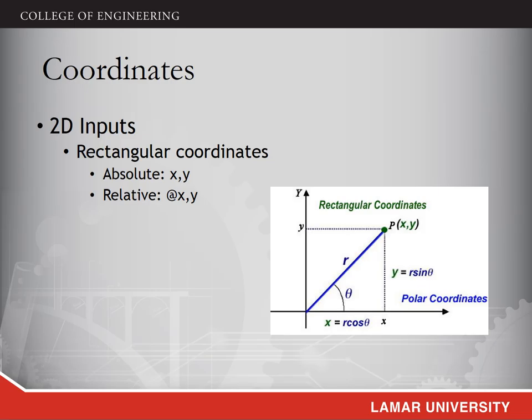With rectangular coordinates, one point is defined by its distance to the x-axis and y-axis. You can use absolute and relative coordinates to define the point. With absolute coordinates, you always use the origin of the coordinate system to calculate the distance to x and y-axis. With relative coordinates, you assume the origin moves to the previous point you just defined. Then you calculate the relative distance to x and y-axis from that origin. Usually, the relative coordinate system can simplify the calculation of coordinates in your drawing.